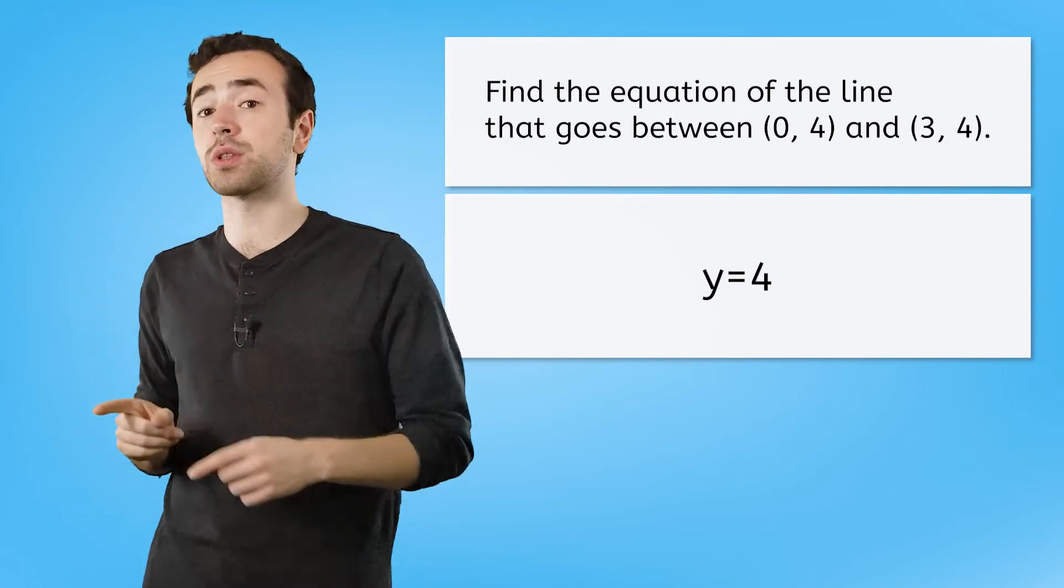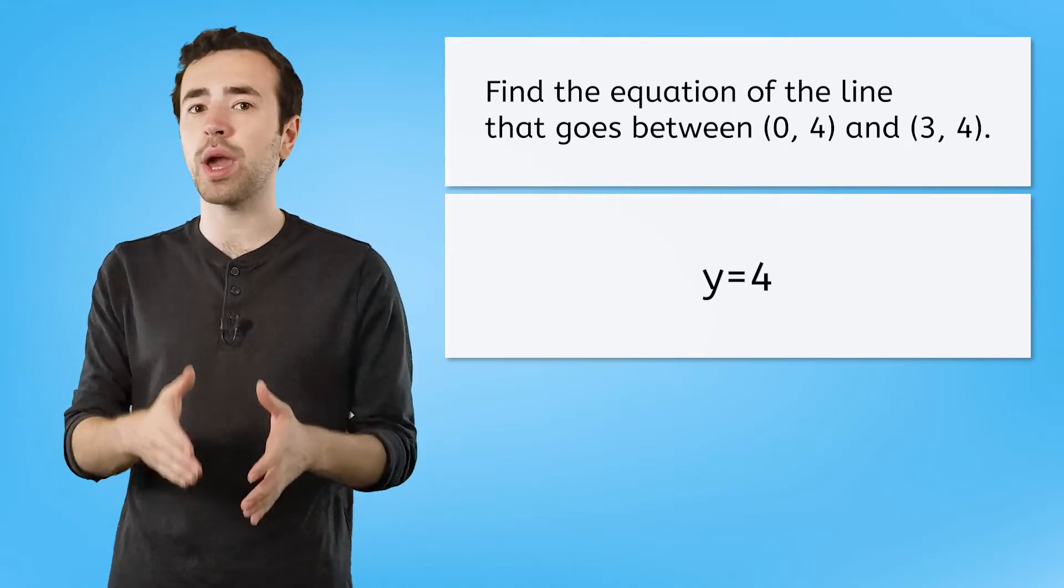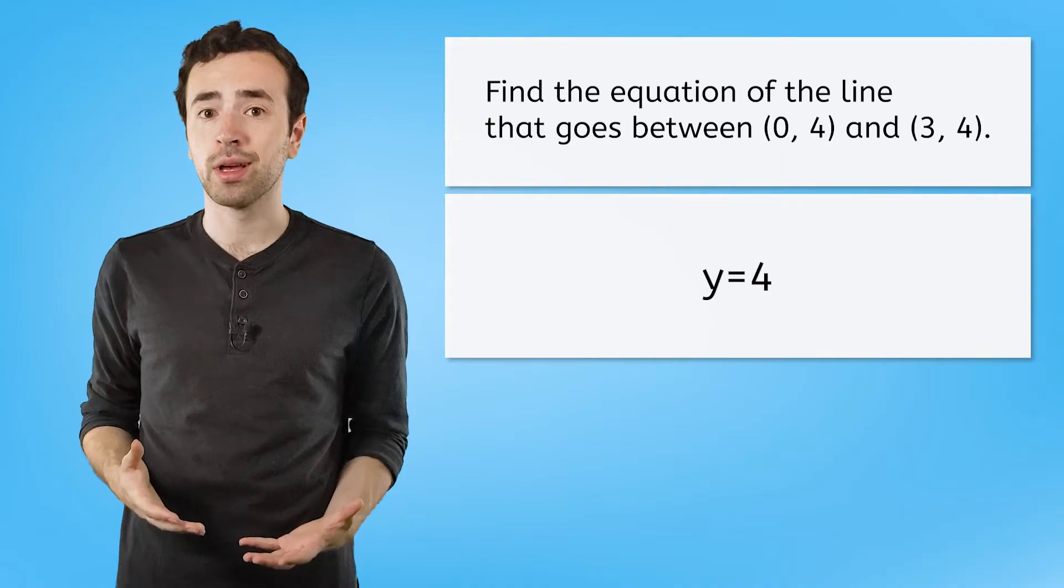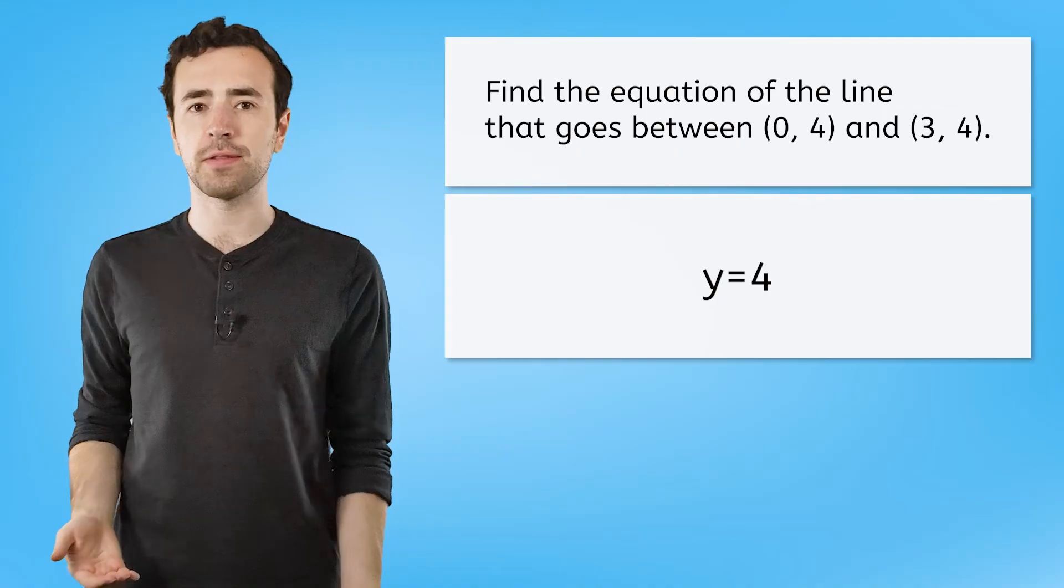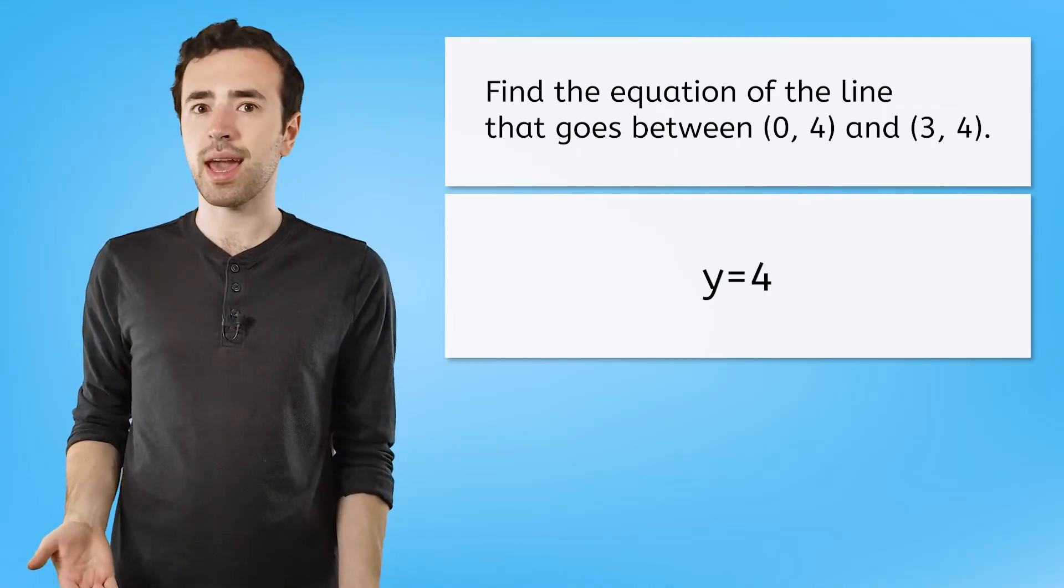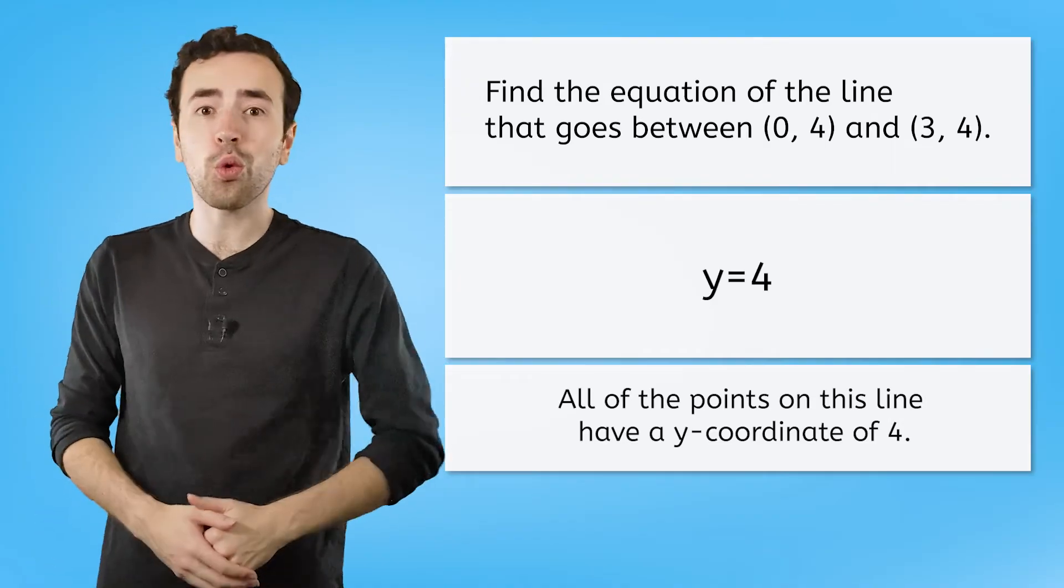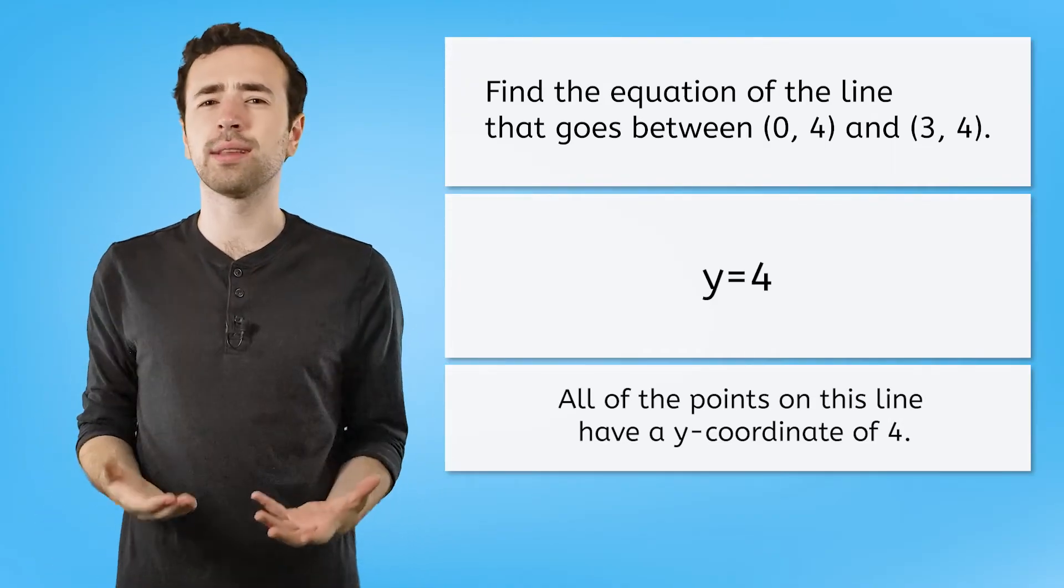If you think back to when we first learned about linear equations, we talked about how the equation of a line is a way to show us what relationship all of the points on that line share. So what do you think all of the points on the line y equals 4 have in common? Yeah, all of the points on this line have a y-coordinate of 4.